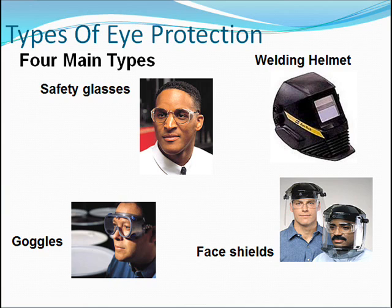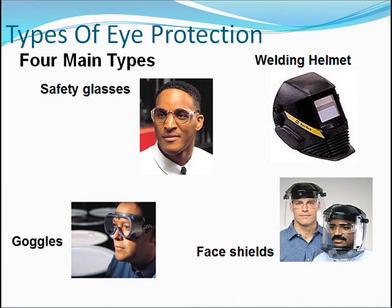Face shields worn alone are not considered protective eyewear. They are designed to provide general protection for the face and front of the neck. Full face shields often protect against chemicals, heat, and glare hazards. Face shields do not fully enclose the eyes and should be used in conjunction with primary eye protectors such as safety goggles or glasses. Face shields are available with crown protectors or chin protectors. Welding helmets are used when welding or working with molten material, protecting the face and neck from heat, glare, weld splatter, and impact hazards. Protective eyewear with appropriate filter lenses must be used to protect against harmful light rays such as infrared, ultraviolet, or laser light.